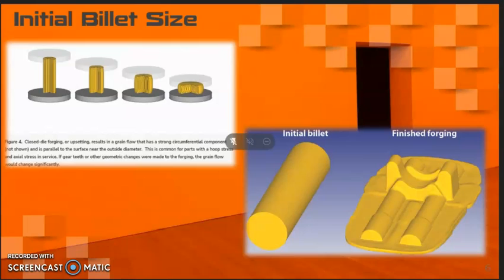Thus, if a fracture started at the root of the tooth, the crack would be propagating in the circumferential direction, which is perpendicular to the radial direction. Therefore, radial grain flow provides an enhancement of fatigue resistance of this gear. The key to increasing the amount of radial grain flow is to upset the initial billet as much as possible.